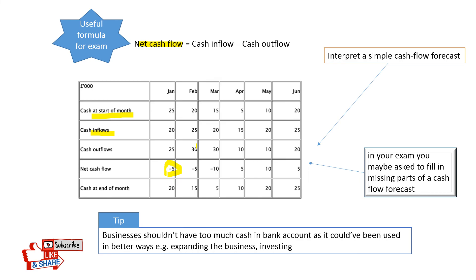In February we had £25 inflows and £30 outflows, giving net cash flow of negative £5, leaving £15 at end of February. March starts with £15, has £20 inflows and £30 outflows — net cash flow is negative £10 — leaving £5. April starts with £5; inflows increased and outflows decreased, giving positive £5 net cash flow, so we are back to £10. As you can see, the cash flow forecast tells us what to expect as a business over several months.